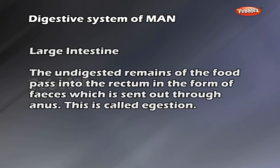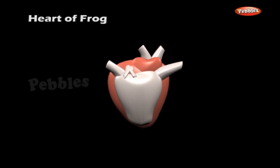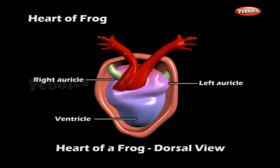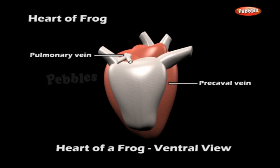The heart of the frog is a three-chambered muscular organ. It has two auricles and one ventricle. The auricles are separated by an interauricular septum. Auricles and ventricles are separated by the auriculo-ventricular septum. There are two pores connecting the right auricle with the ventricle and the left auricle with the ventricle. There are valves to stop the backflow of blood into the auricles. The blood vessels bringing blood to the heart are the pre-caval vein, post-caval veins and pulmonary vein.